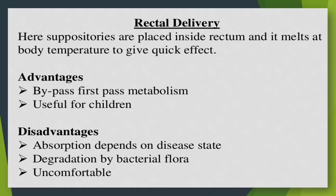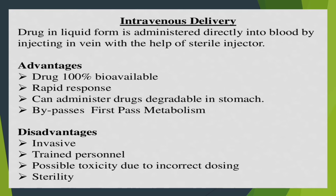For intravenous delivery, the drug in liquid form is administered directly into the blood by injecting into a vein with the help of a sterile injector. Advantages: drug is 100% bioavailable, rapid response, can administer drugs degradable in the stomach, and bypasses first pass metabolism. Disadvantages: invasive, requires trained personnel, possible toxicity due to incorrect dosing, and sterility requirements.